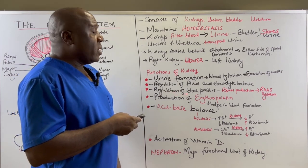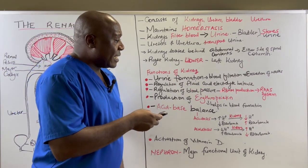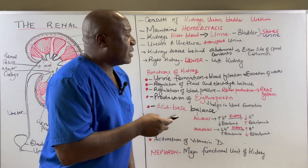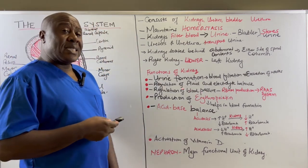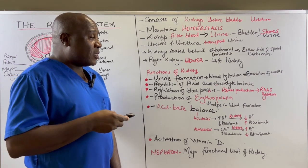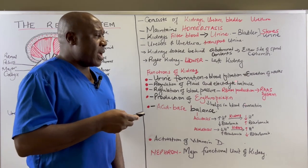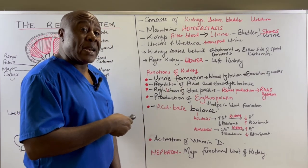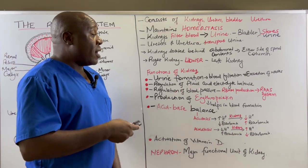Kidneys play a role in the regulation of blood pressure. They do this by producing an enzyme referred to as renin. This enzyme initiates what is referred to as the RAS system — the renin-angiotensin-aldosterone system. When the kidneys sense decreased perfusion or decreased blood flow, they produce this enzyme to help increase blood pressure, initiating a system that will increase blood pressure to ensure that the kidneys are perfused properly.